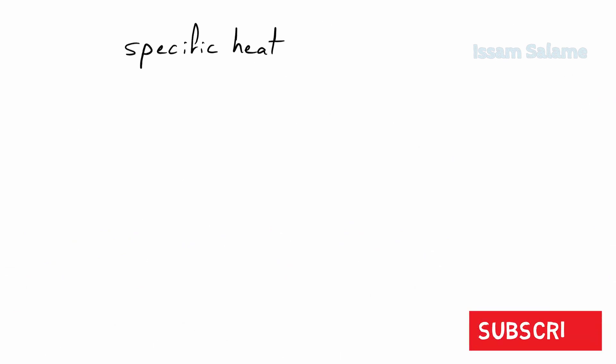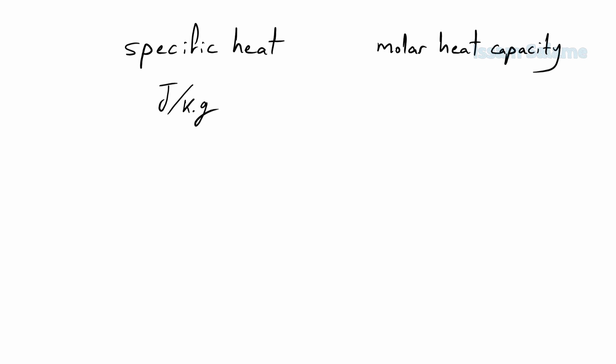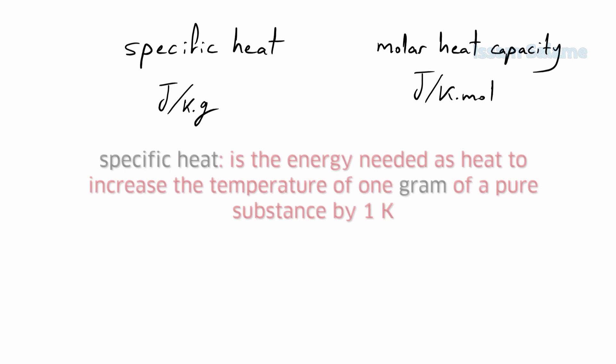To find the relation between specific heat and molar heat capacity, let me write their units first. The unit for specific heat is joules per Kelvin dot gram, while the unit for molar heat capacity is joules per Kelvin dot moles. Specific heat is the energy needed as heat to increase the temperature of 1 gram of a pure substance by 1 degree Kelvin.